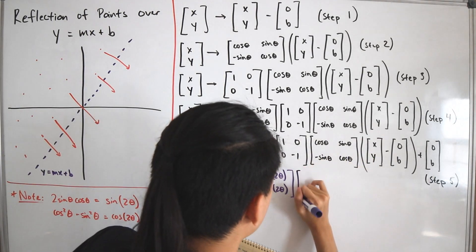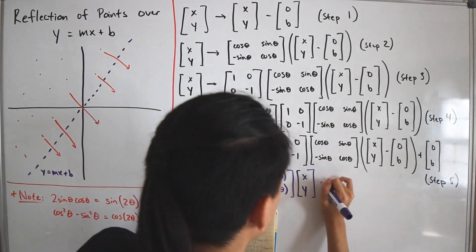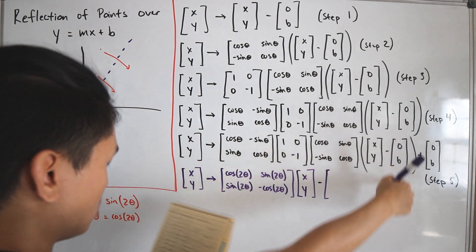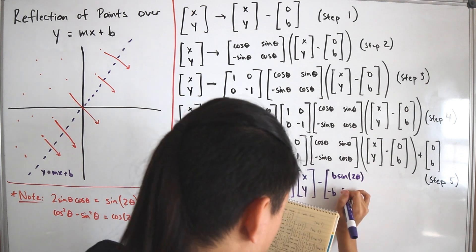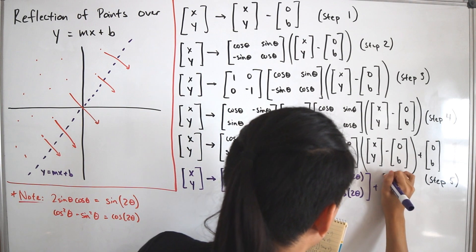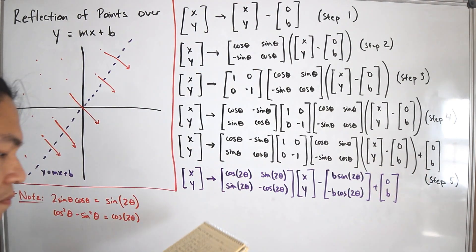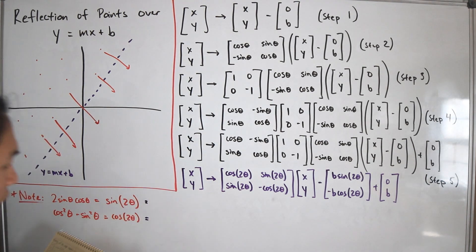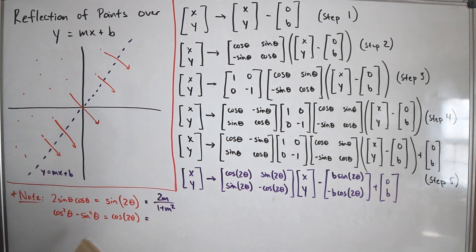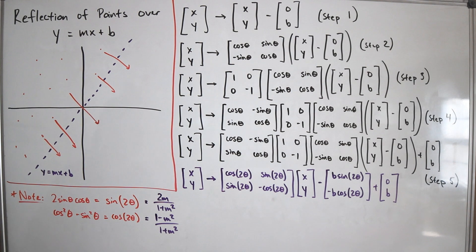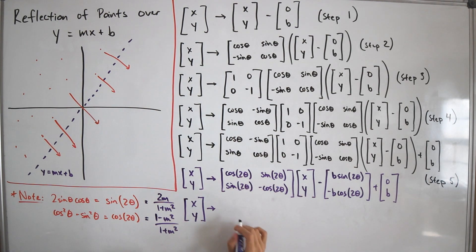Now we multiply this matrix by (x, y) minus (0, b) and then add (0, b) from the final translation. Using the identity m equals tan θ, we substitute: sin(2θ) equals 2m divided by (1 plus m²), and cos(2θ) equals (1 minus m²) divided by (1 plus m²). These substitutions allow us to express everything in terms of the slope m rather than the angle θ.